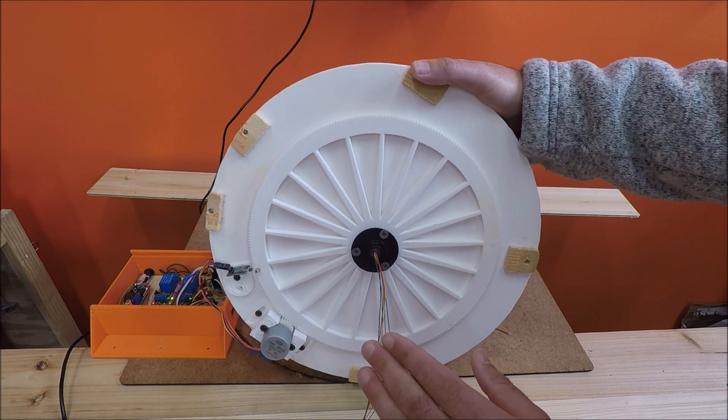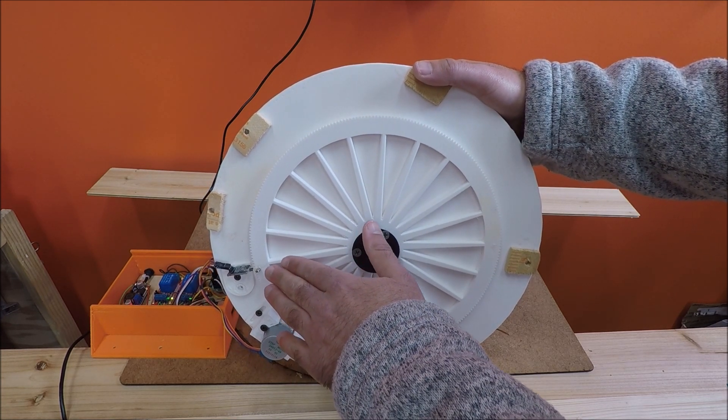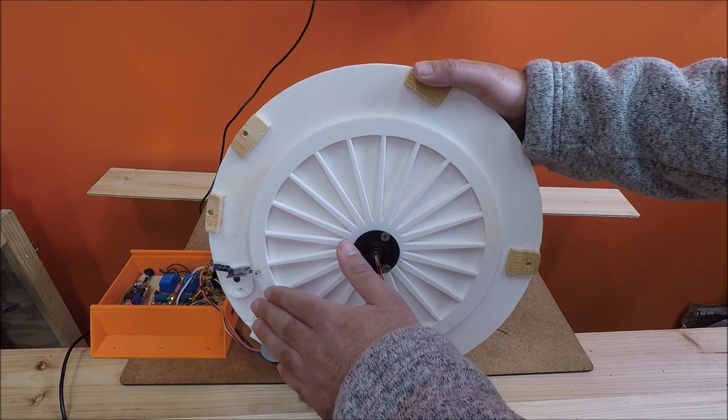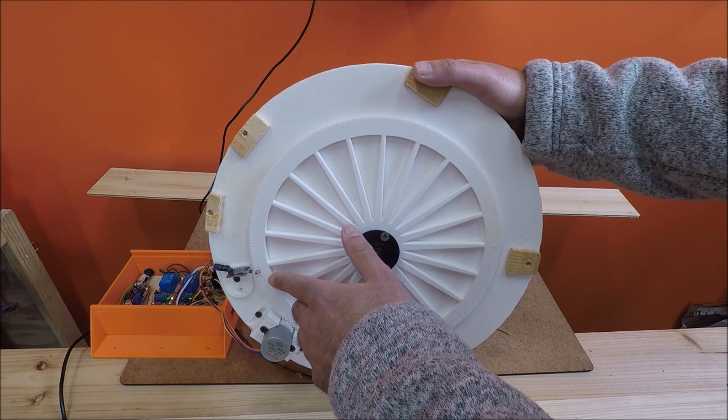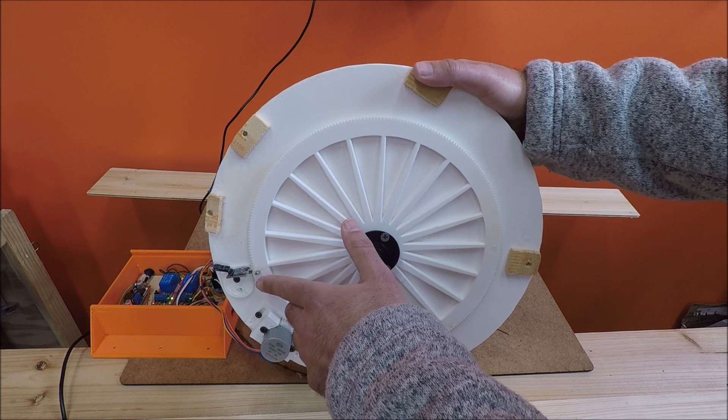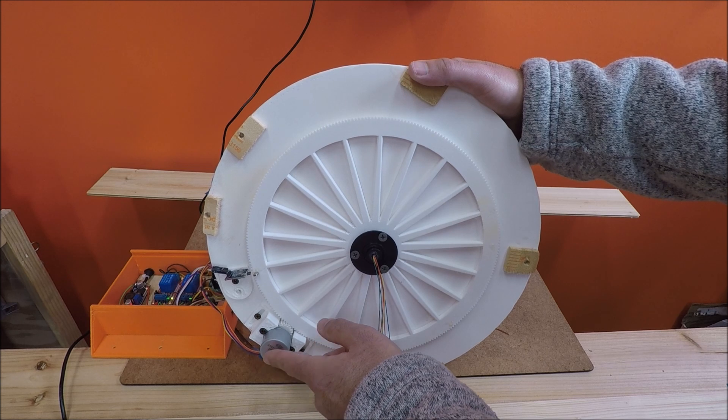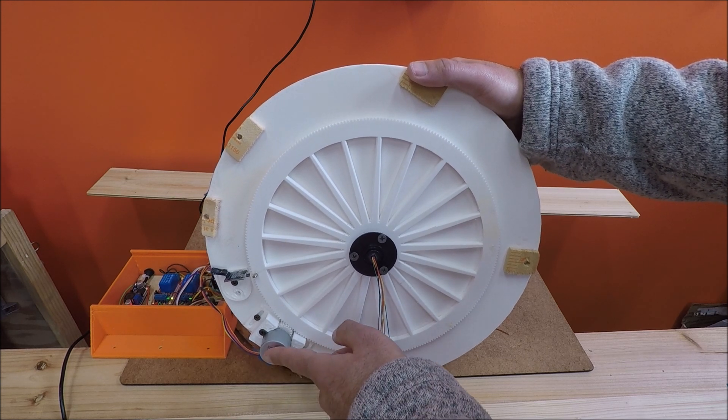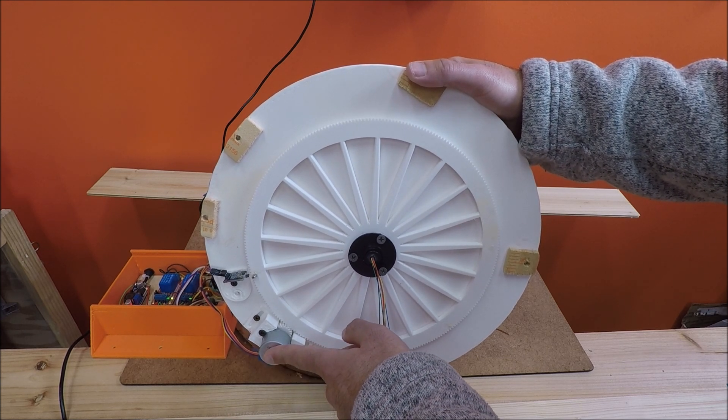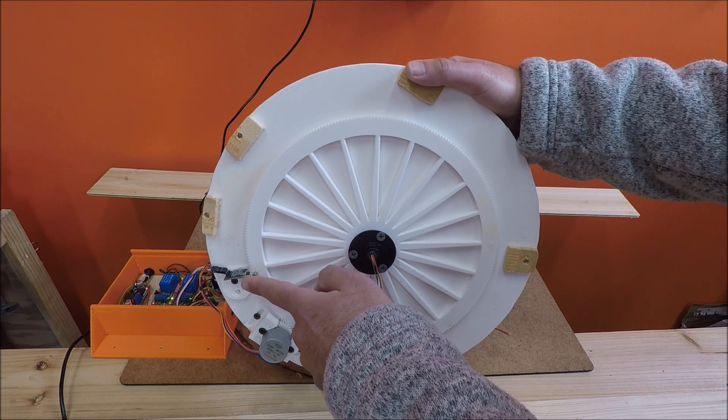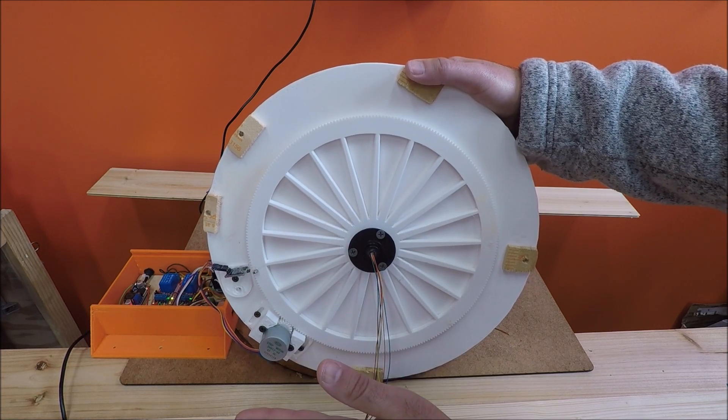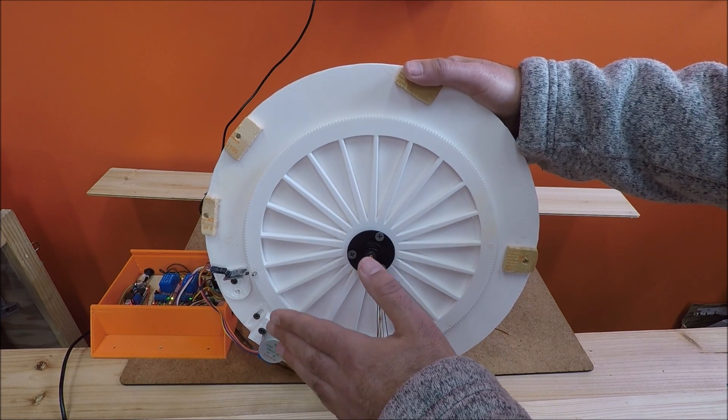The reason that's important is because there's what I refer to as a dead band. So you can't see it now, but whenever this turntable moves, this hall effect sensor is very accurate, but there's actually a couple steps. Like for example, let's say 10 steps. This stepper motor can move 10 steps and this magnet is triggering the hall effect sensor the entire time. So that's what I call the dead band.